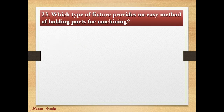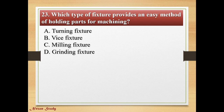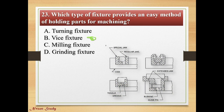Question: Which type of fixture provides an easy method of holding parts for machining? Options: turning fixture, vice fixture, milling fixture, grinding fixture. Correct answer is vice fixture. This is the vice fixture.